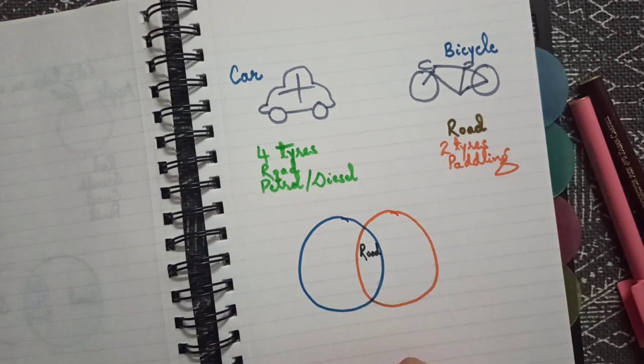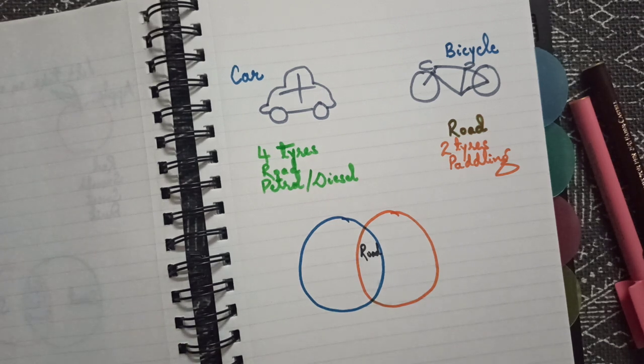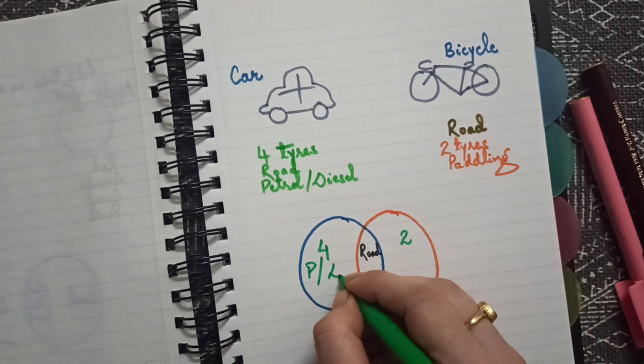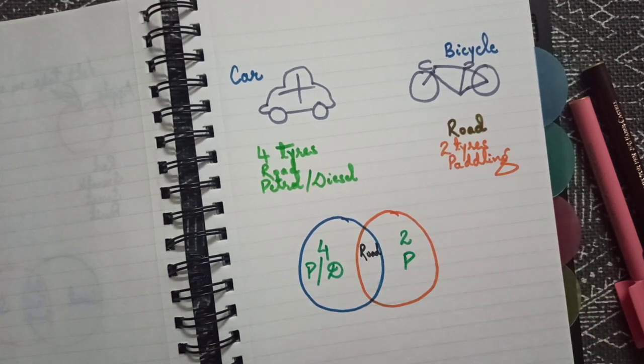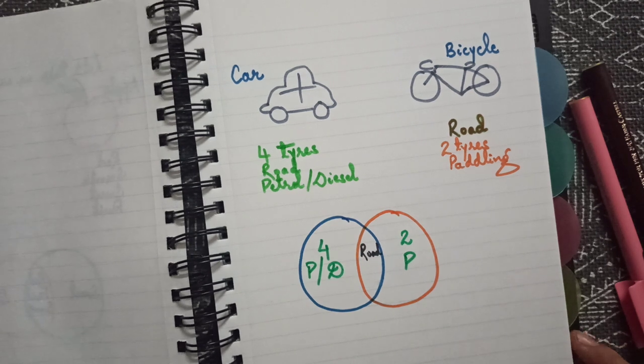So similarity includes both are road transportation. What are the differences? One has four tires, one has two tires. One runs on petrol or diesel, the other runs on pedaling. So this is all about Venn diagram.